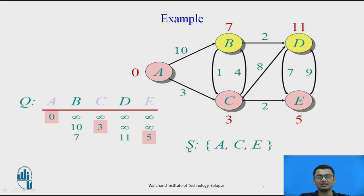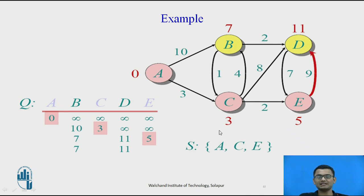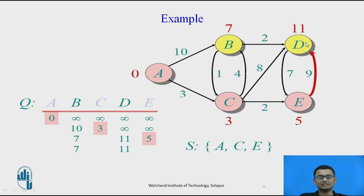The minimum weight is 5, so the next node to enter set S is E with weight 5. Now A, C, and E are in set S. We check the adjacent nodes of E: D is adjacent at weight 9 from E. Since E is at distance 5 from A, 5 plus 9 equals 14, which is greater than 11, so we do not apply relaxation and keep D at 11. The weights of 7 and 11 are not updated in this iteration, and the next node to enter is B with weight 7, as 7 is less than 11.